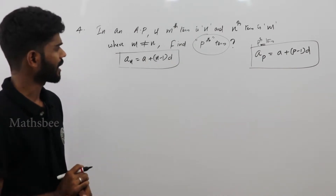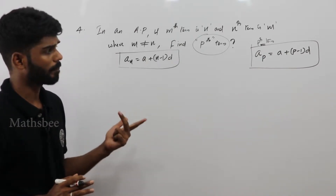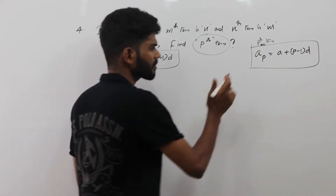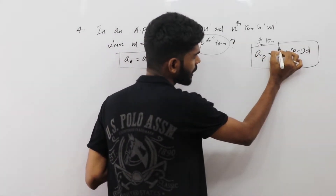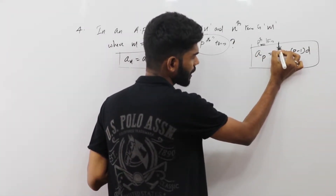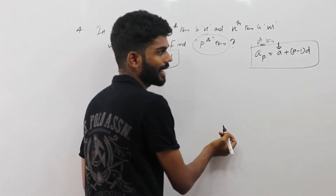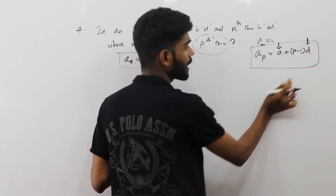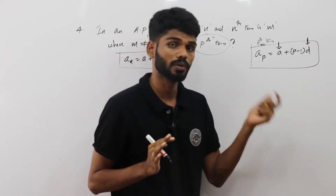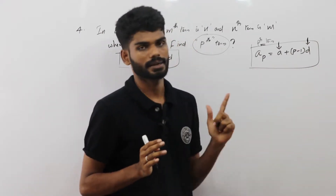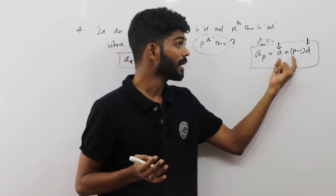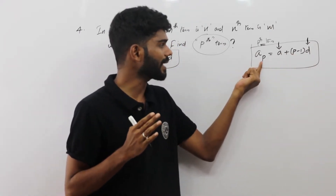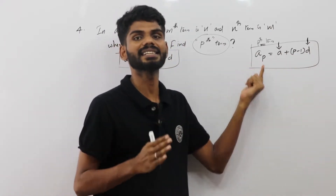We will start the problem. The Pth term is: A_P equals A plus (P minus 1) times D. To find this, we need to find two things — the values of A and D, the three variables: A, P, and D.